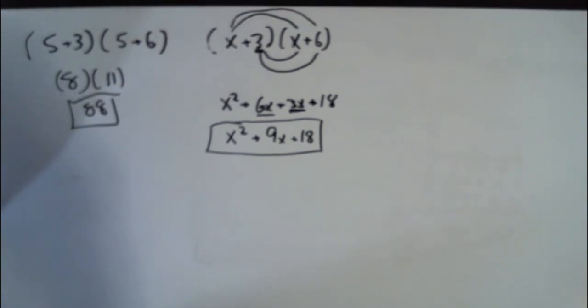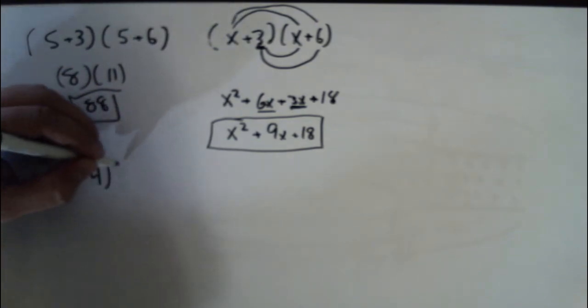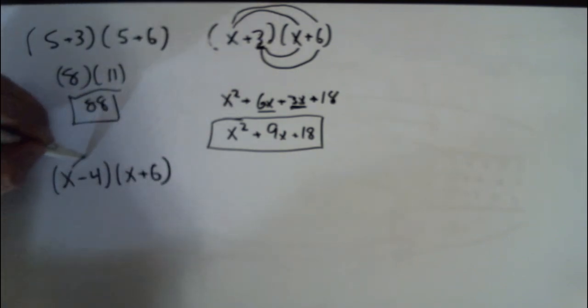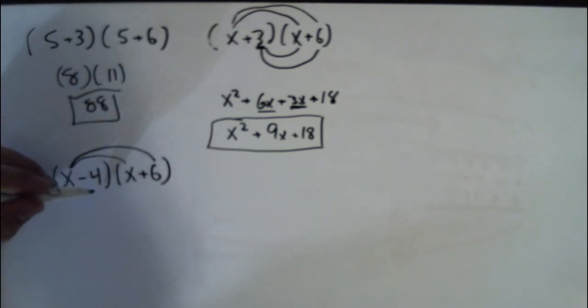Let's talk about another one. How about x minus 4 times x plus 6. Well, first I'll do x times x plus x times 6 plus negative 4 times x plus negative 4 times 6.